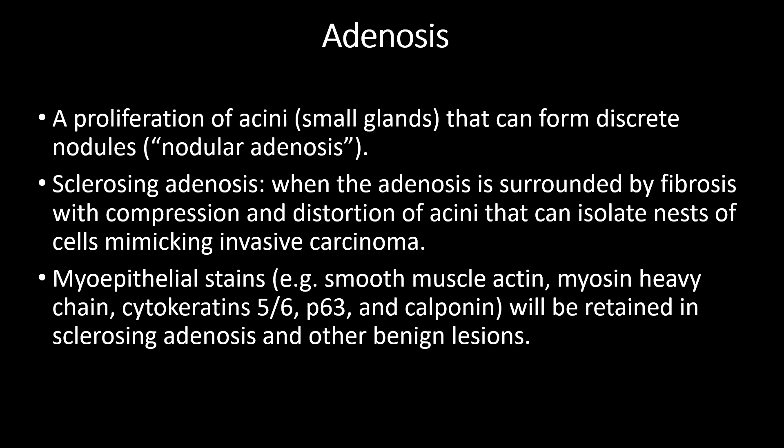Adenosis is a proliferation of acini, which are small glands that can form discrete nodules, also called nodular adenosis. Sclerosing adenosis is when adenosis is surrounded by fibrosis with compression and distortion of the acini that can isolate nests of cells mimicking invasive carcinoma. Myoepithelial stains like smooth muscle actin, myosin-heavy chain, cytokeratins 5, 6, p63, and calponin will be retained in sclerosing adenosis and other benign entities.